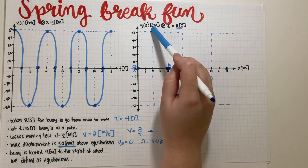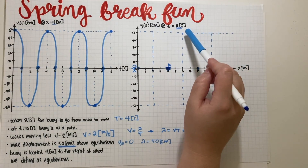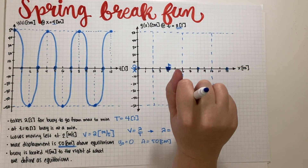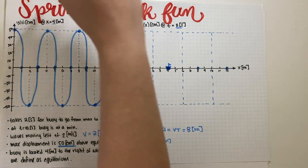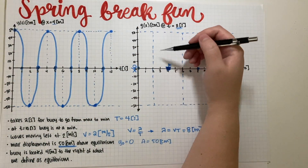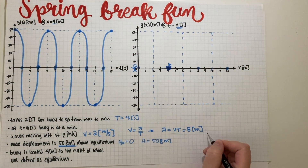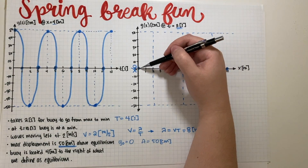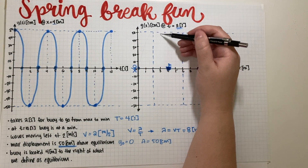At this point we have two possibilities for the spatial graph: either the wave starts up then goes down at x = 4, or it starts down and then goes up. We need additional information to distinguish these two cases.